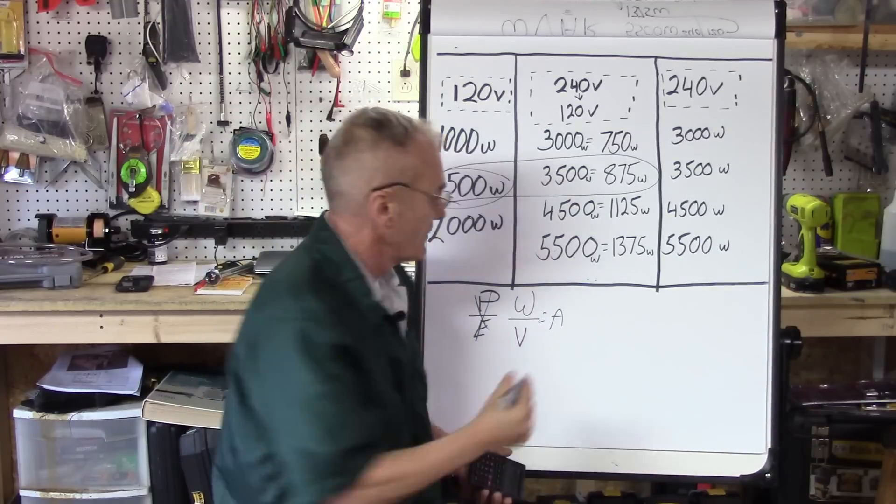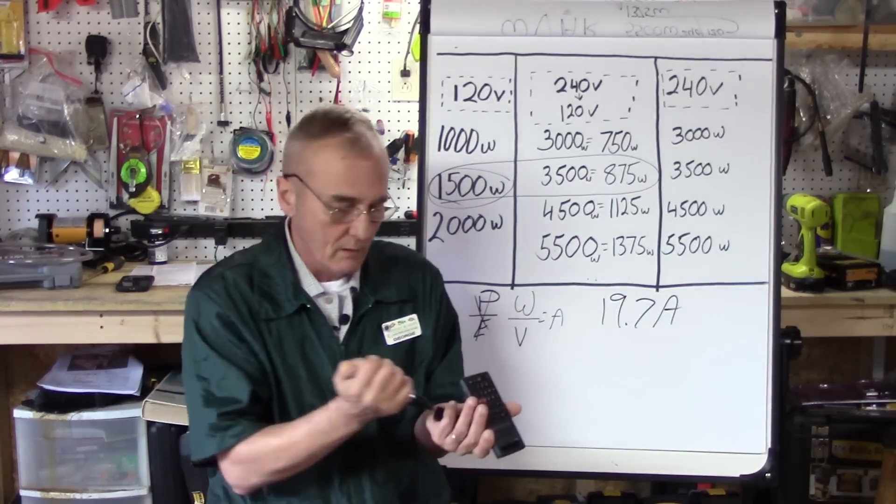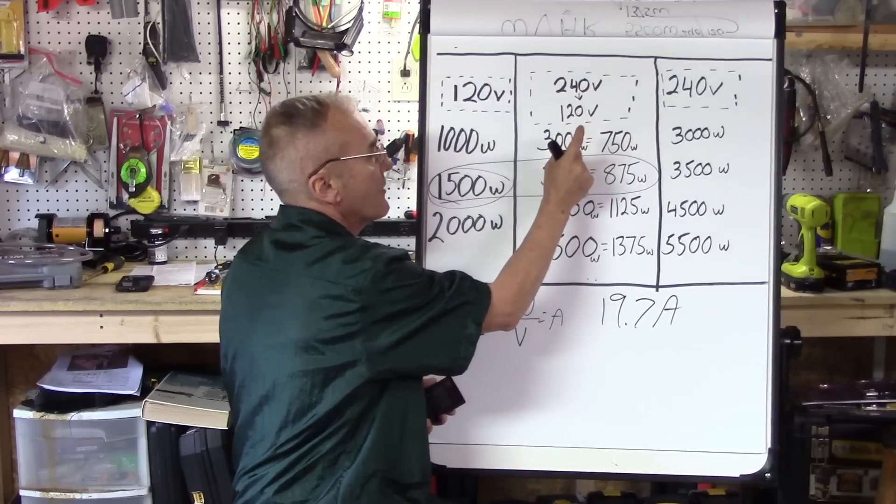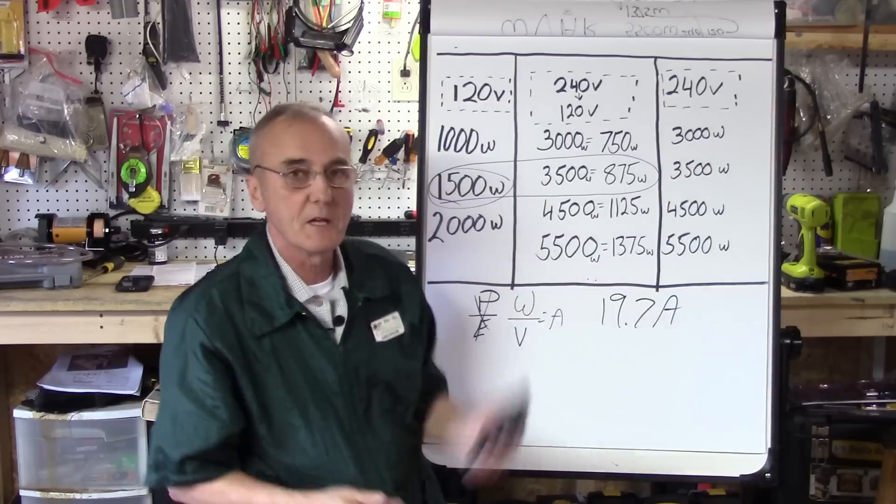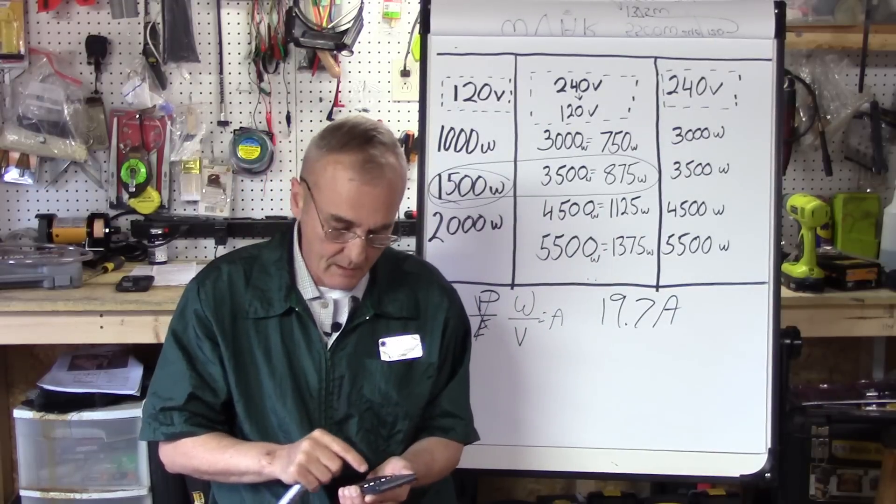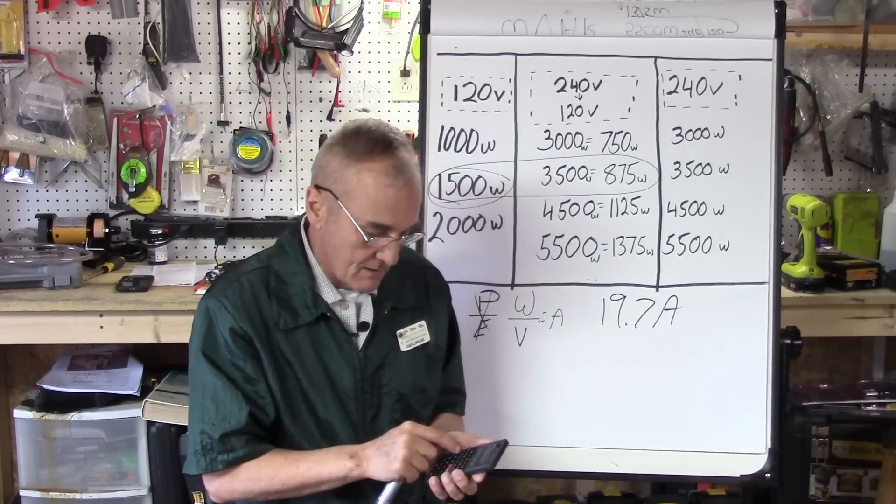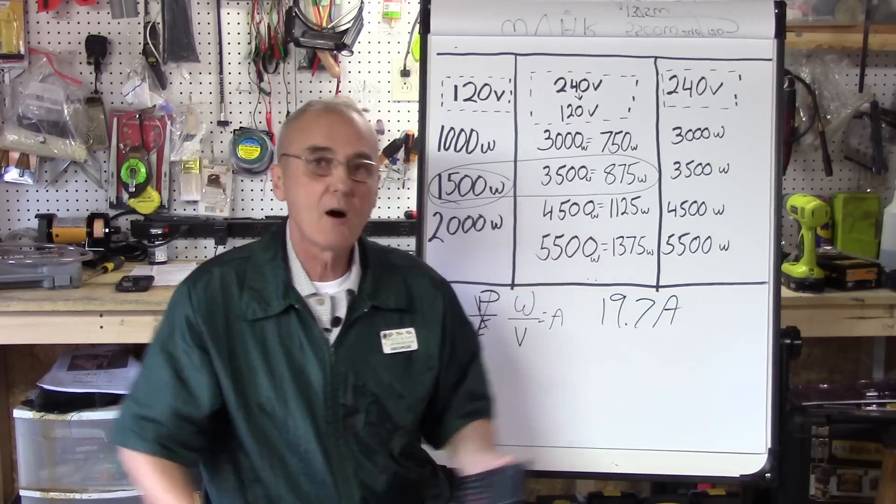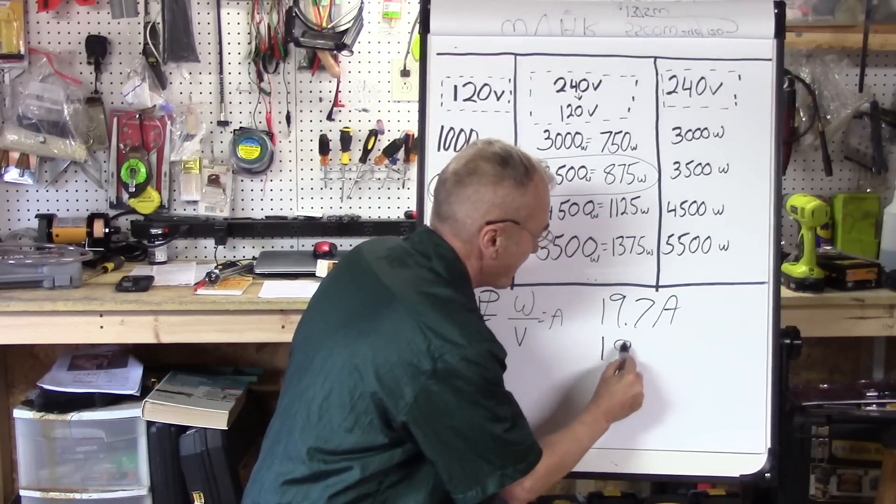I'd like to get a little bit lower. Right now I'm at 19.7 amps. Let me try another combination: the 1500 watt and the 3000 watt wired at 120, which is now 750. 1500 plus 750 divided by 120—now I'm at 18.75 amps. I've dropped an amp and I feel much safer with that, because I've got two elements now on that 120 volt circuit.